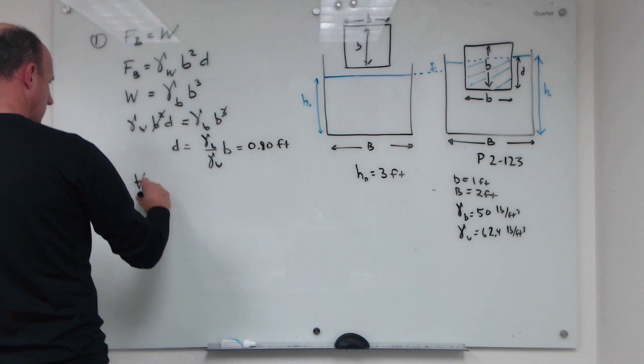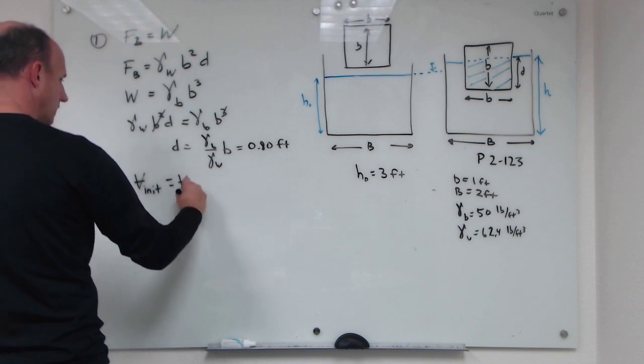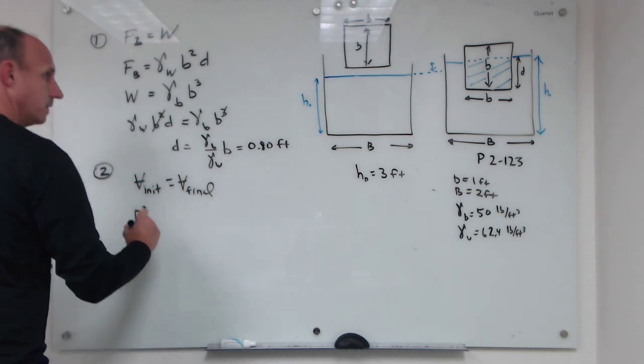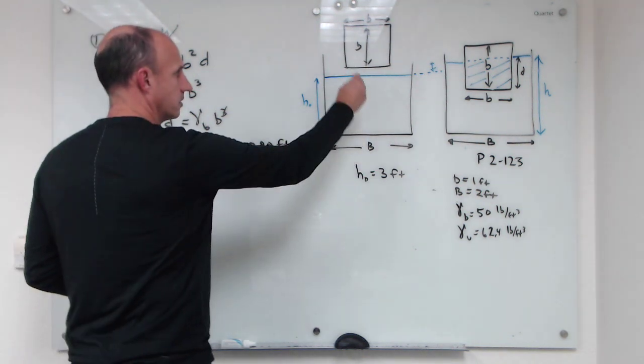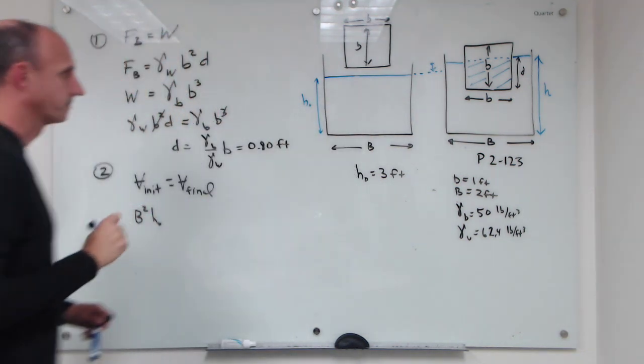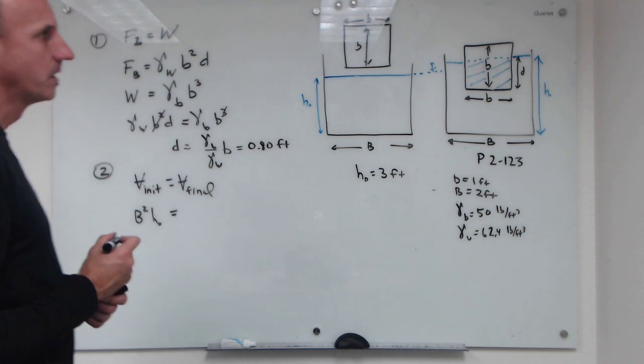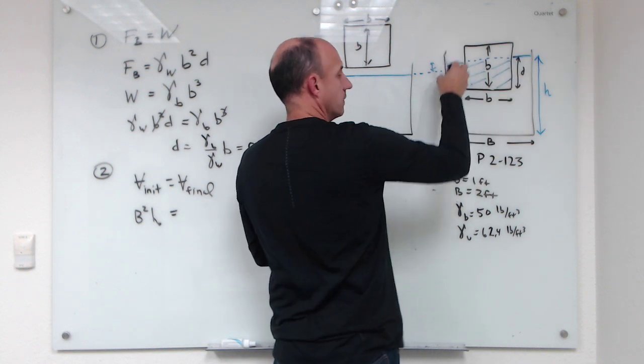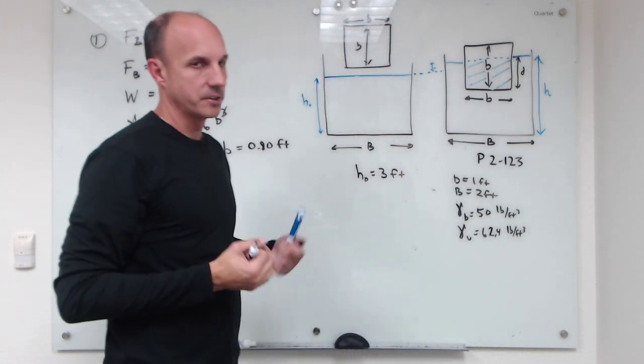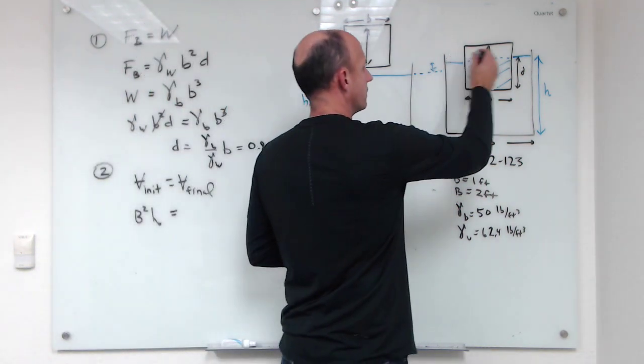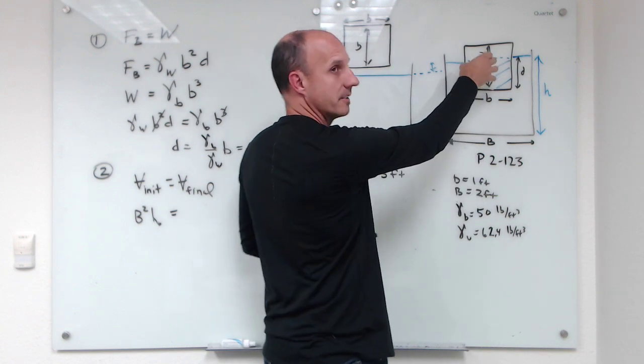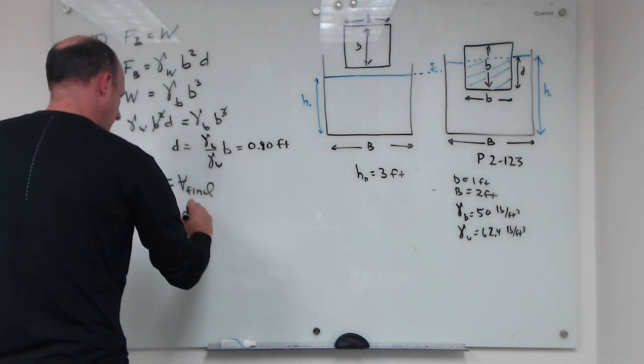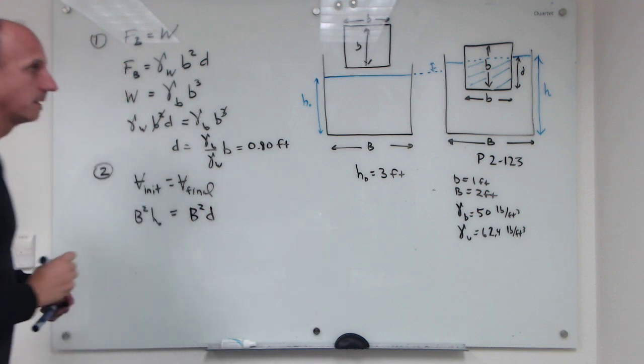The volume initial equals volume final. The initial volume of water is B squared times H zero, so H zero is the initial depth here, that's three feet. And the final volume can be thought of either as this volume down here plus what's on the sides of the block, or a better way to think about it is the volume of this entire cube up here minus the part where it's been displaced by the block.